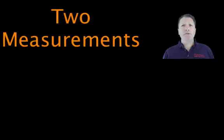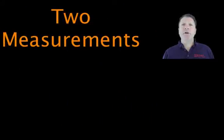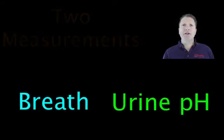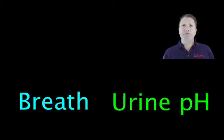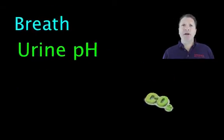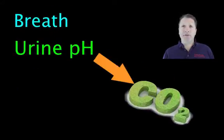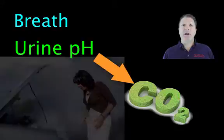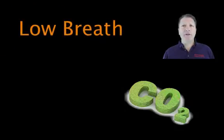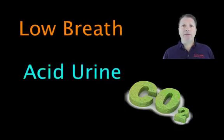Two measurements together — your breath rate and your urine pH — tell how much CO2 you're dumping, and this tells how well your engine is running. A low breath rate and acid urine indicate low CO2 production, and hence compromised energy.